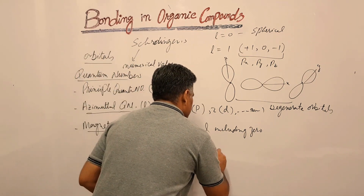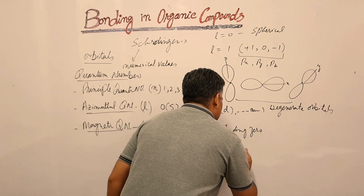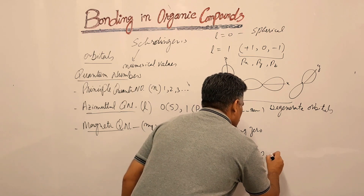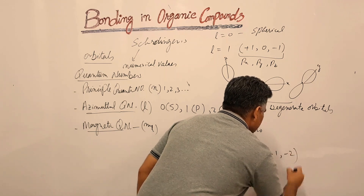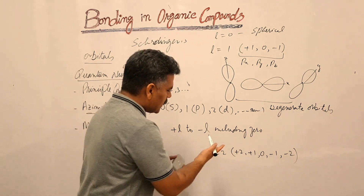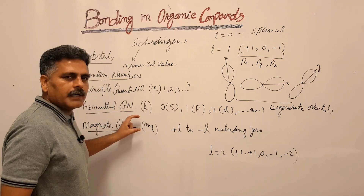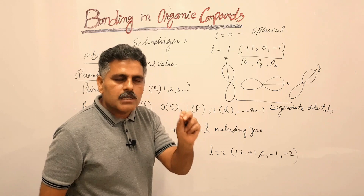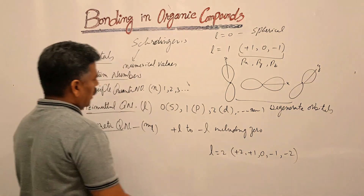When the magnetic quantum number value is two, it means five orientations for d orbitals. To summarize, the magnetic quantum number describes the orientation of your orbital in space or around the nucleus in which electrons revolve.